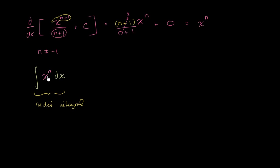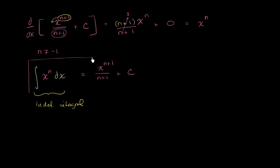Well, we know: this is asking what function has x to the n as its derivative. We just figured it out. We're encapsulating multiple constants — we could have plus 0, plus 1, plus 2, plus pi, plus a billion. So the antiderivative equals x to the n plus 1 over n plus 1, plus c.